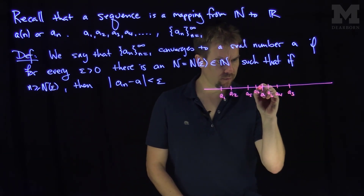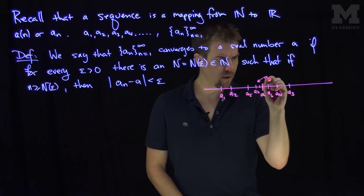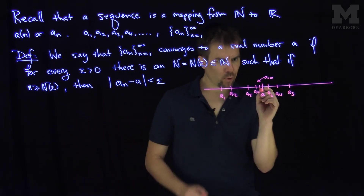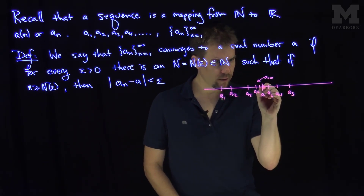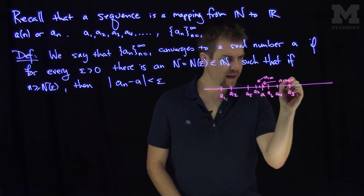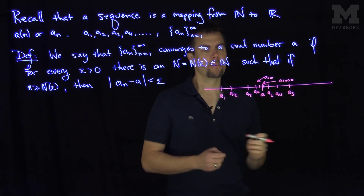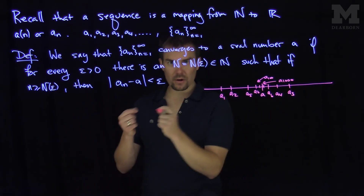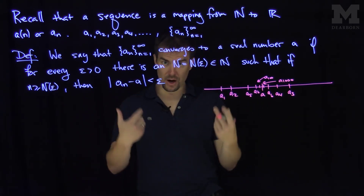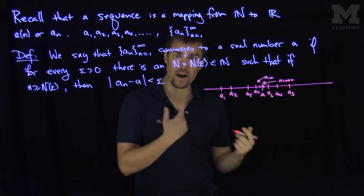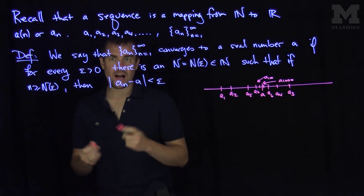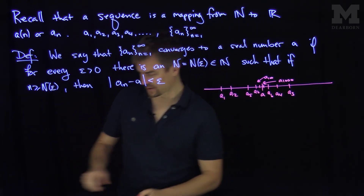And so for example, this point over here might be a_100. Maybe this point over here is really close — that might be a_1000. But those points, as n gets larger and larger, the values a sub n for large n have to be very, very close to the value a in distance. So let's see an example of how we would actually prove something like this.